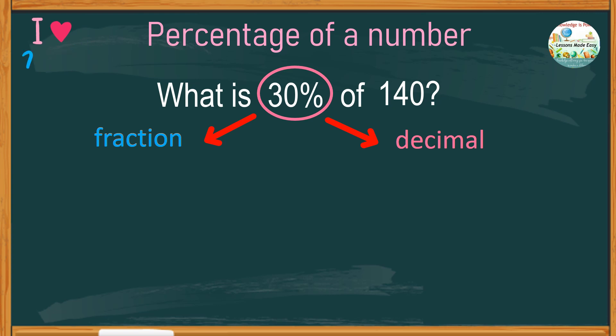So, 30% in fraction is 30 over 100. And the word of means you multiply, in this case, with the number 140. Since 140 is a whole number, changing it into a fraction comes with 1 as the denominator.